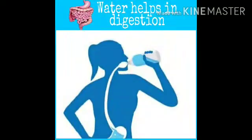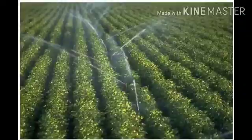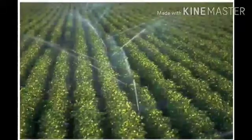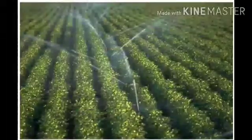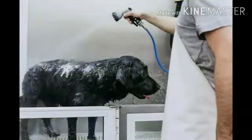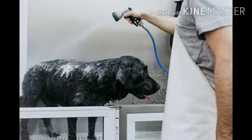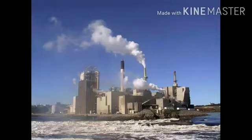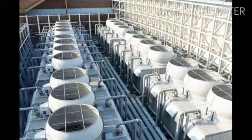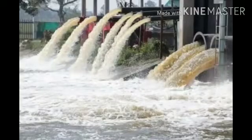Water plays an important role in the digestion of food. Water is necessary for irrigation of crops and is an integral part of agriculture. Humans make use of water for a wide range of domestic activities such as washing and cleaning. Many industries require large quantities of water for processing, cooling, and diluting their products, needing water for almost every step of their process.